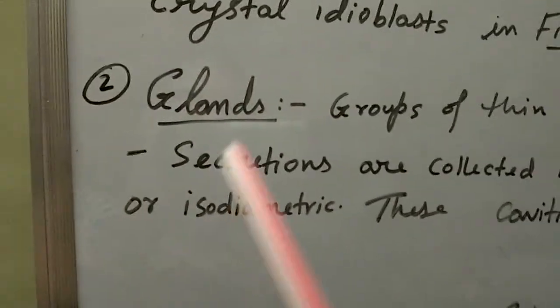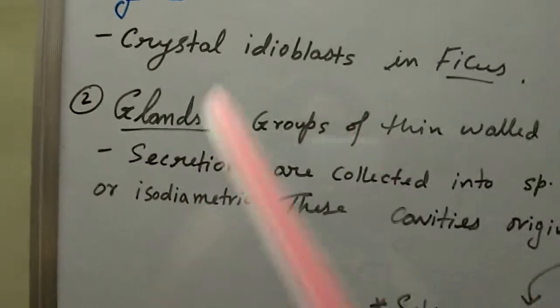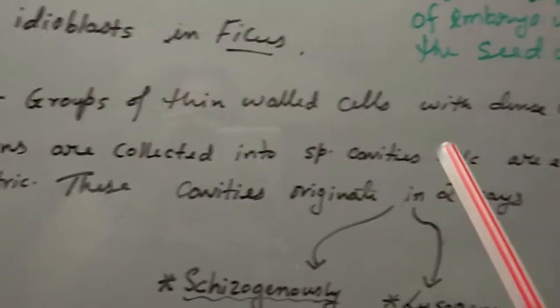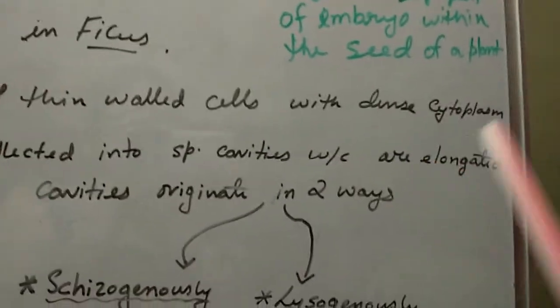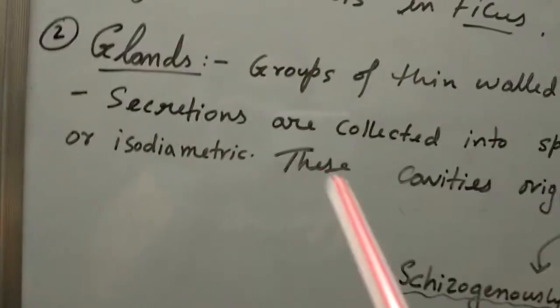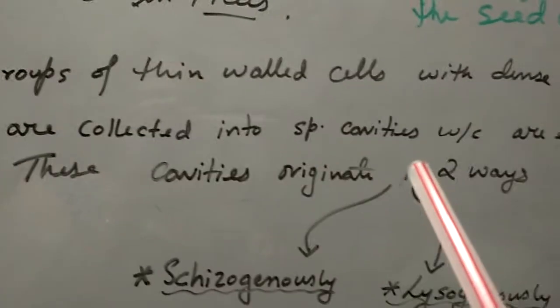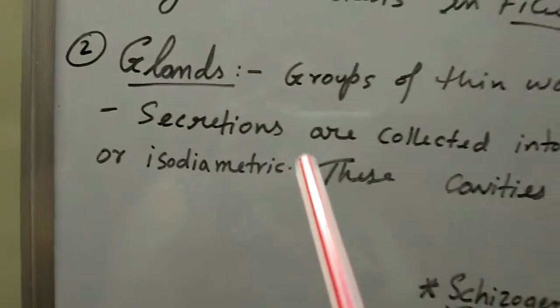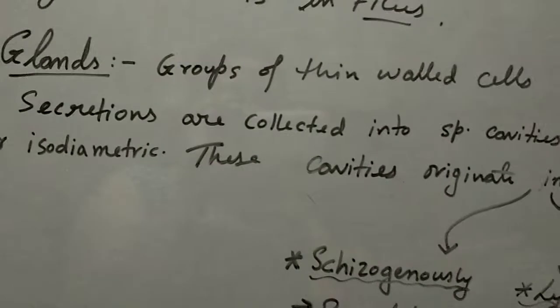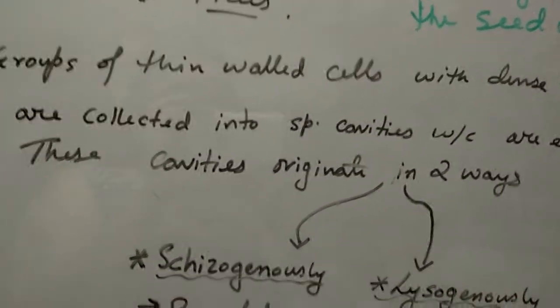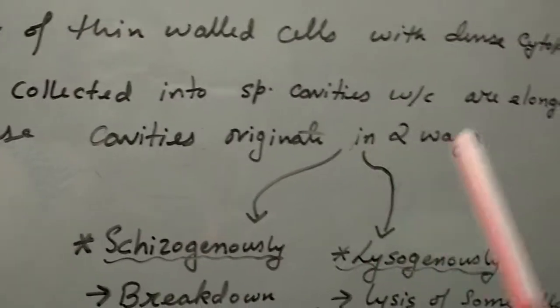The second type of internal secretory structure is glands. Glands are basically groups of thin-walled cells with dense cytoplasm. Secretions are collected into special cavities which are elongated or isodiametric. These secretory cavities store the secretions and originate in two main ways.